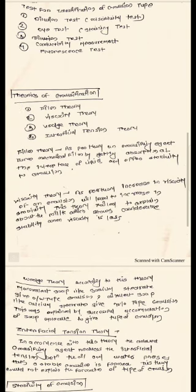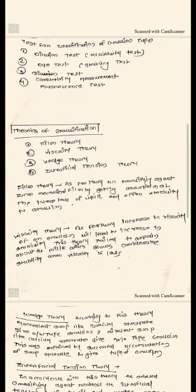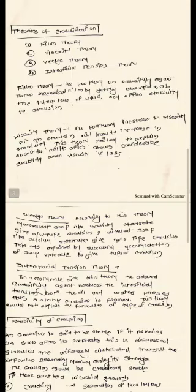In the viscosity theory, a rise in viscosity leads to an increase in stability. However, this theory cannot explain why milk has considerable stability when its viscosity is low. In the wedge theory, monovalent soaps like sodium stearate give an oil in water type of emulsion. This is explained by the successful accommodation of soap molecules, which determines the type of emulsion formed.